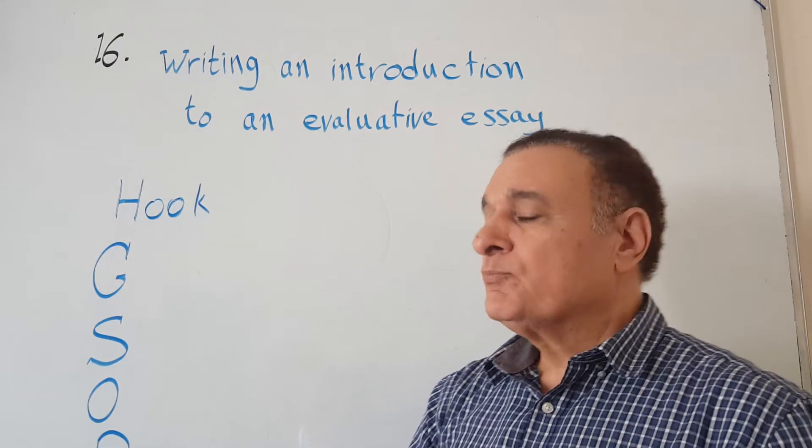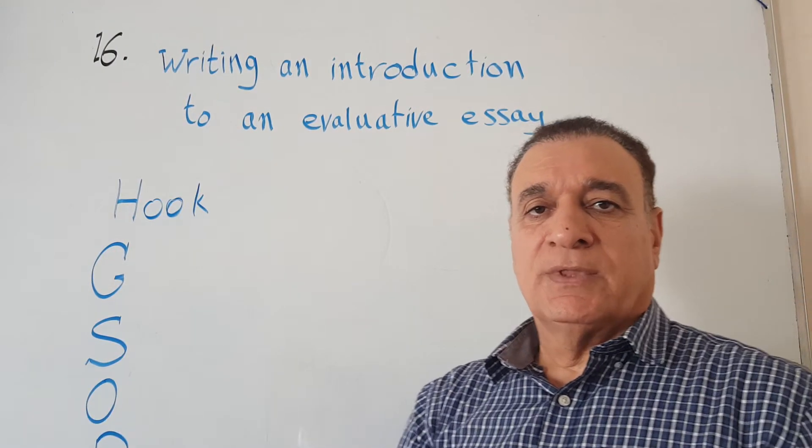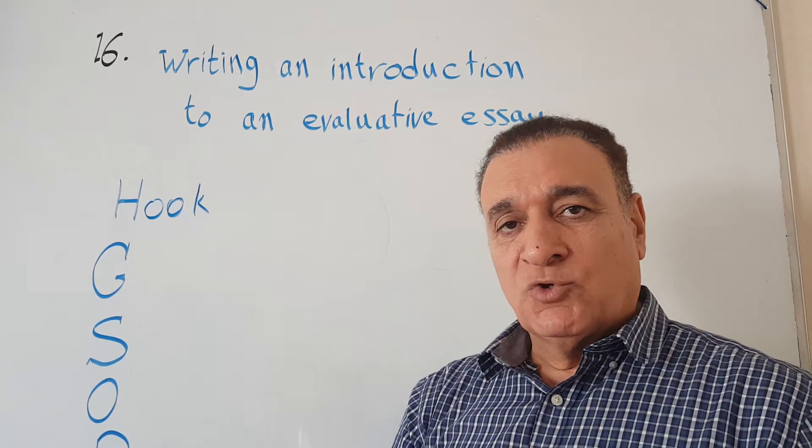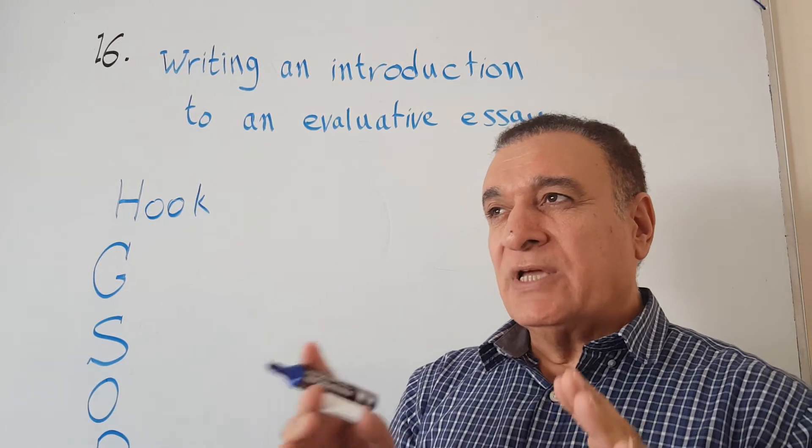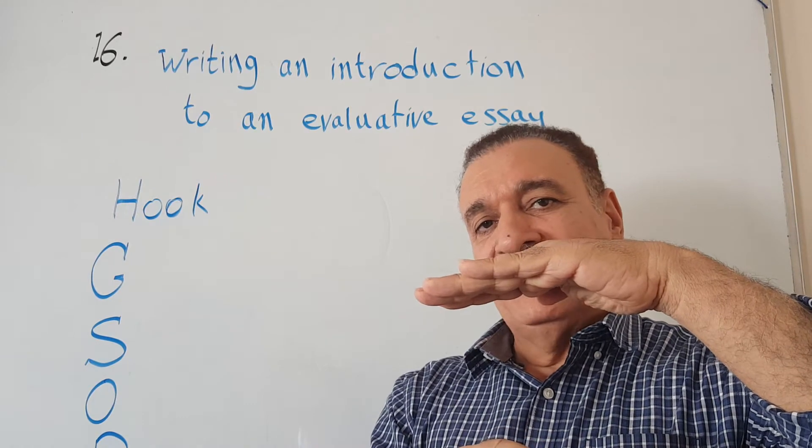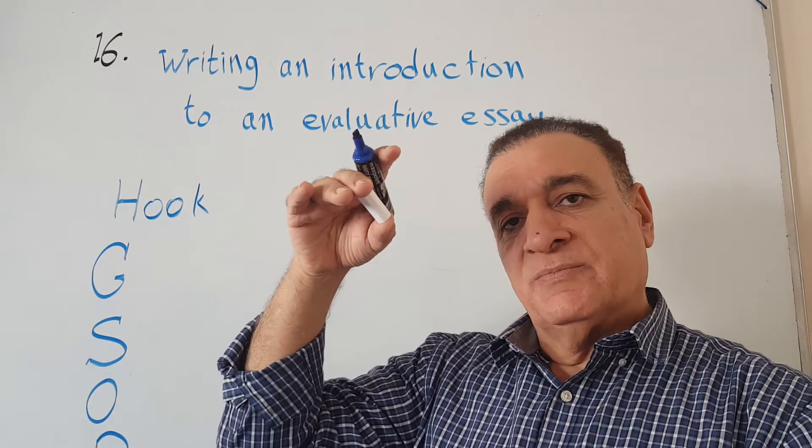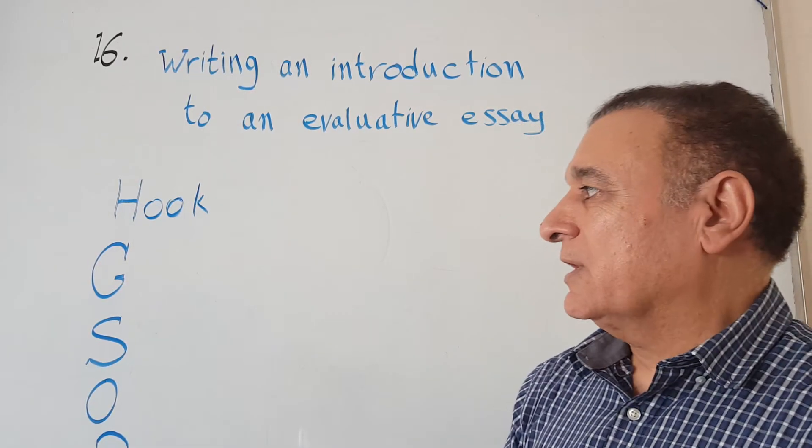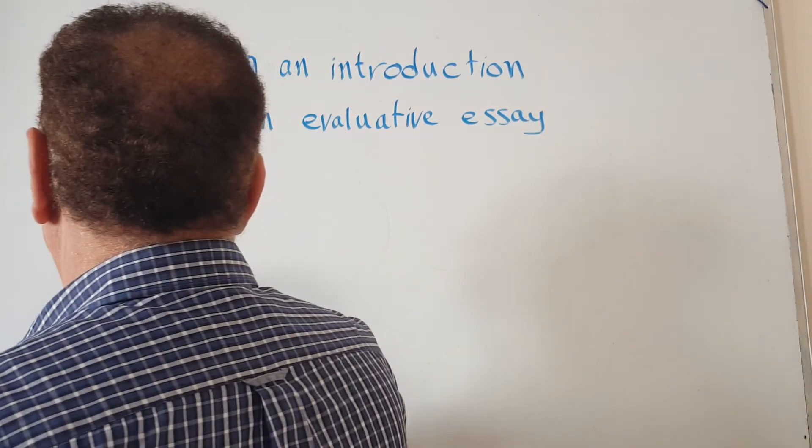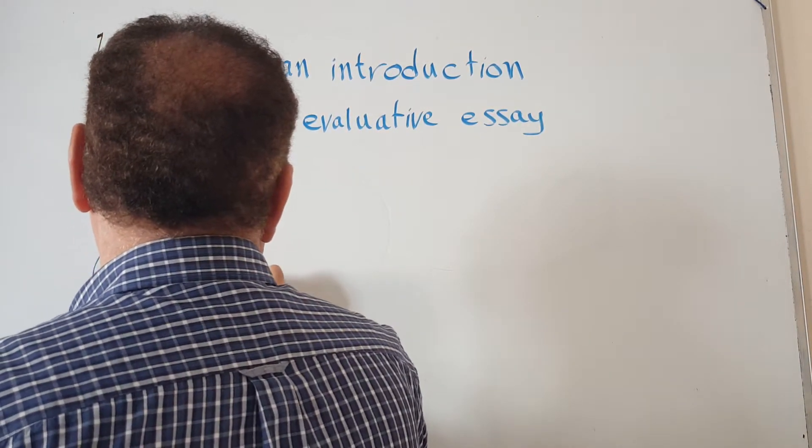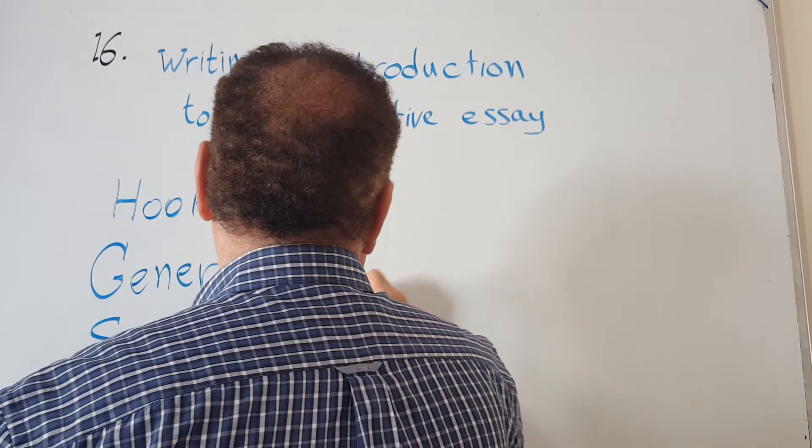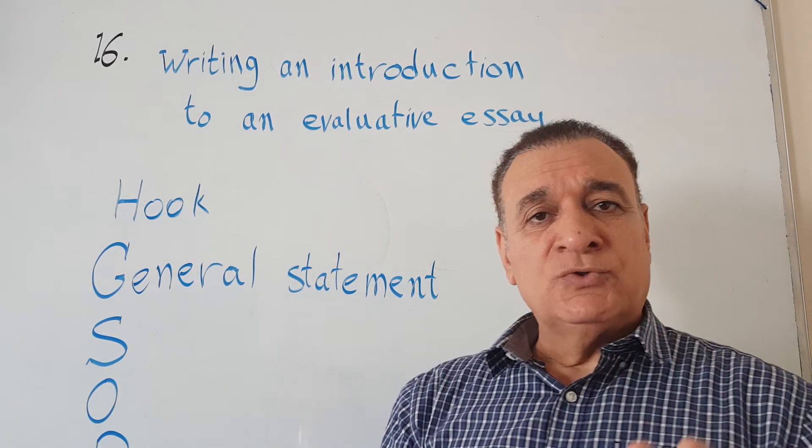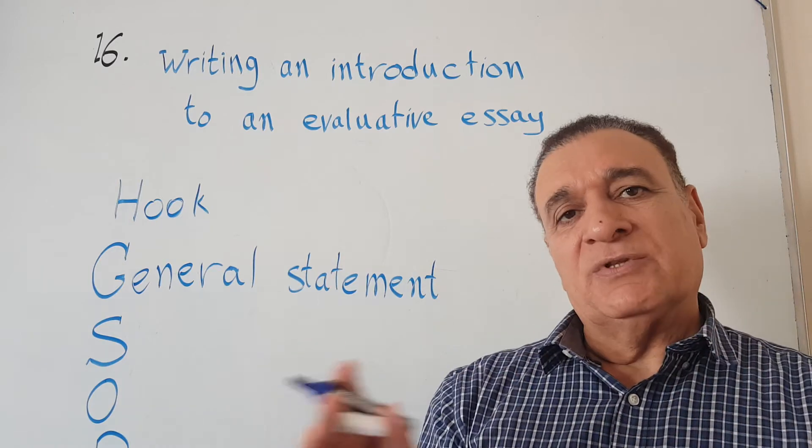After the hook, we must start with a general statement about the topic we are discussing. But of course we can start sometimes with the general and then the hook comes later, or we start with the hook and the general comes later. But we should not leave either of them. We should not leave any of them. So this is a general statement, and the general statement you write only one or two sentences related generally to the topic you are going to discuss.